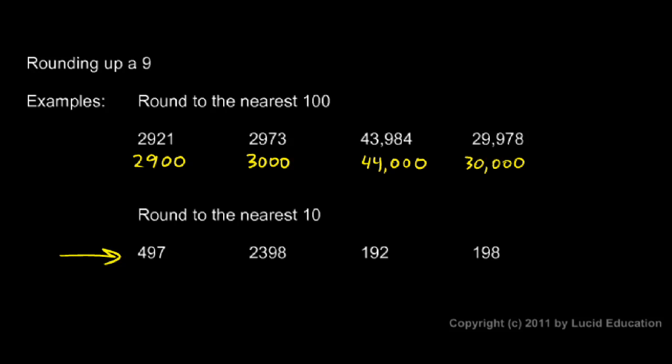Now, down in this last row of examples here, round to the nearest ten. 497 rounded to the nearest ten. We look at the tens place. The next digit is 5 or higher, so we round up. The answer is 500.